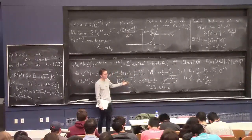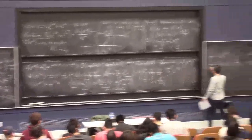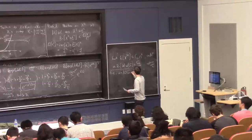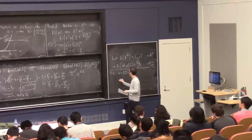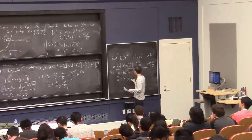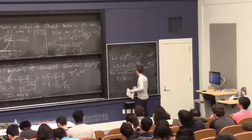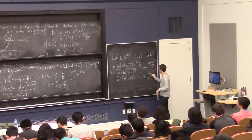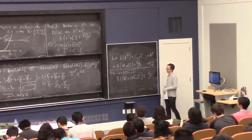For example, with this bound: if we take u to be 10 root ln n times root n, we get that the probability that x is at least this value is at most e to the minus u squared over 2n, which works out to exactly 1 over n to the 50. That's really cool.